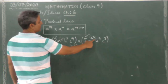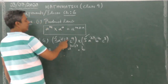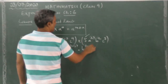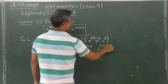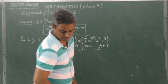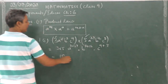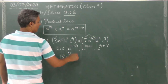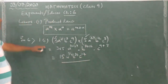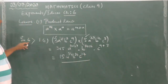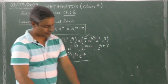For a: a to the power of 7 into a to the power of 27 — add the powers. For b: b to the power of 8 into b to the power of 16 — add the powers. For c: 9 plus 8. The answer is 15a to the power of 34, b to the power of 24, c to the power of 17. This is how you use the Product Law.